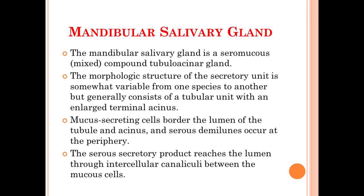The secretory product of the mandibular salivary gland consists of serous plus mucus products. The serous secretory product released from the different secretory units will reach the different tubule lumens with the help of intercellular canaliculi — an extremely narrow tubular channel located between adjacent cells that helps in the transportation of the serous secretory product.